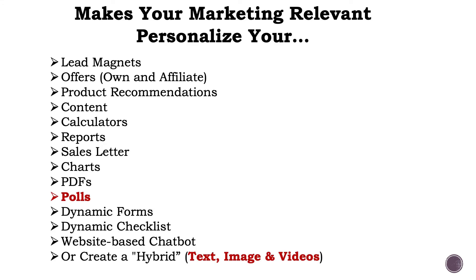You can make your marketing relevant and personalize a number of things from the questions and answers you learn about your leads and customers — personalized lead magnets, personalized offers (your own or affiliate offers), bundles of offers, product recommendations (particularly good for e-commerce), and dynamically generated content from answers: calculators, reports, sales charts, personalized PDFs, and combinations thereof. You can also do polls, dynamic forms, checklists, a web-based chatbot, and hybrids that include any number of these things, including text, image, and videos.